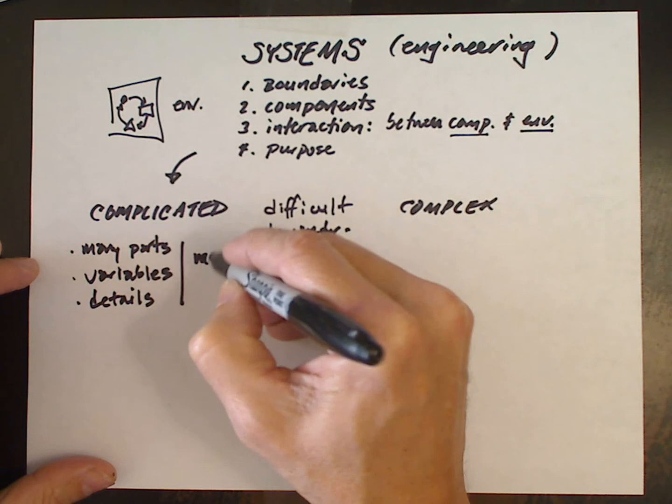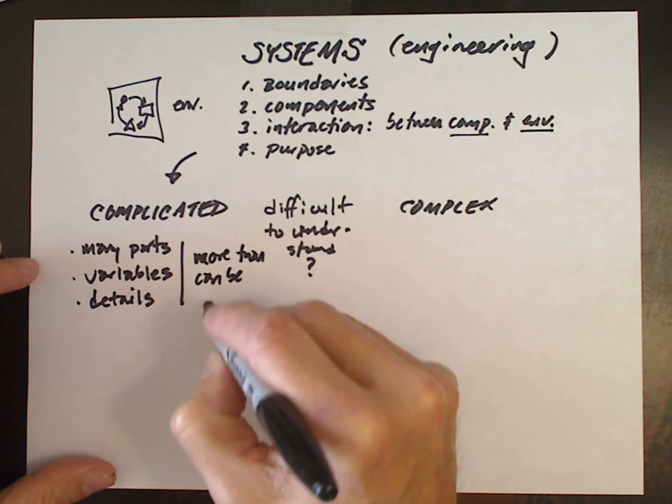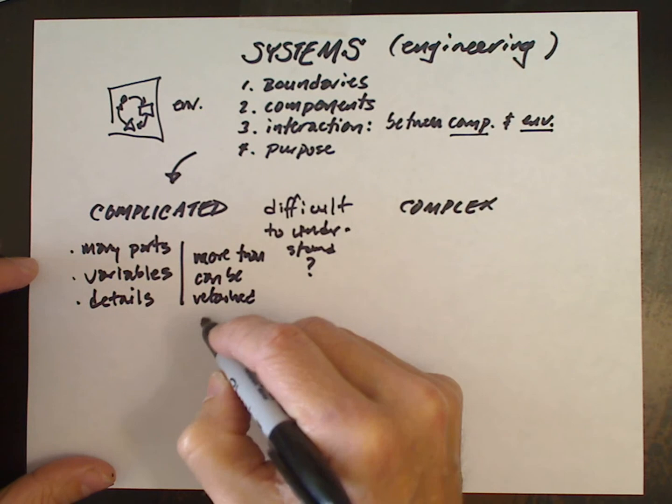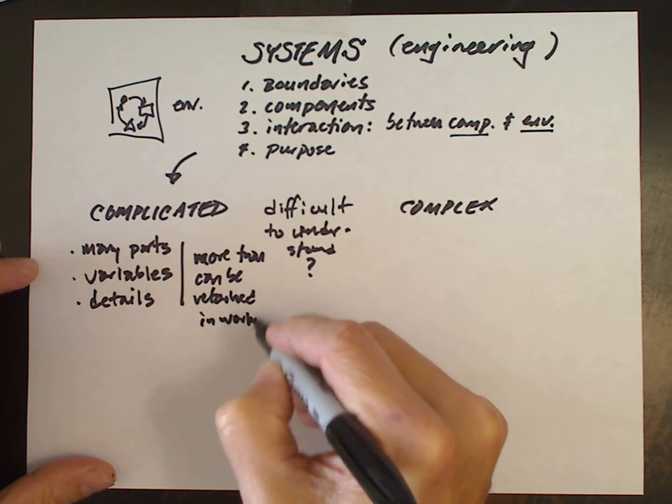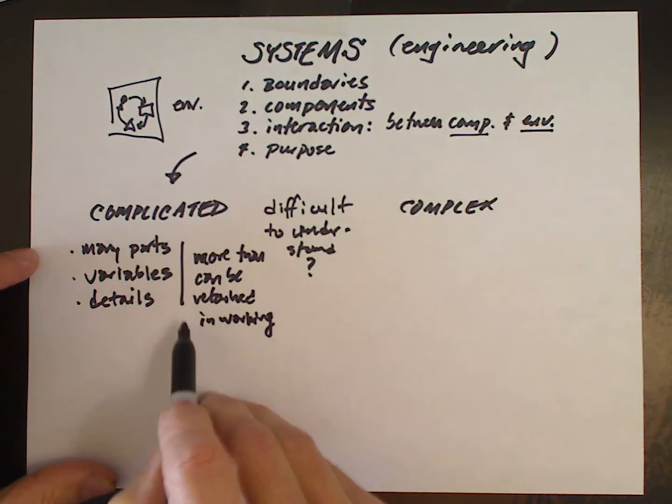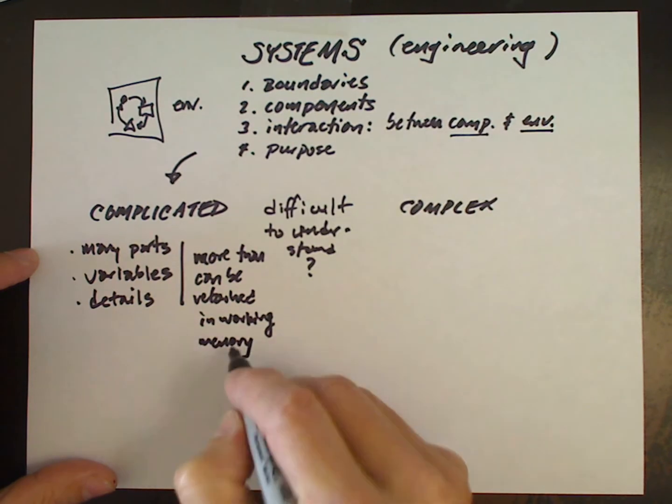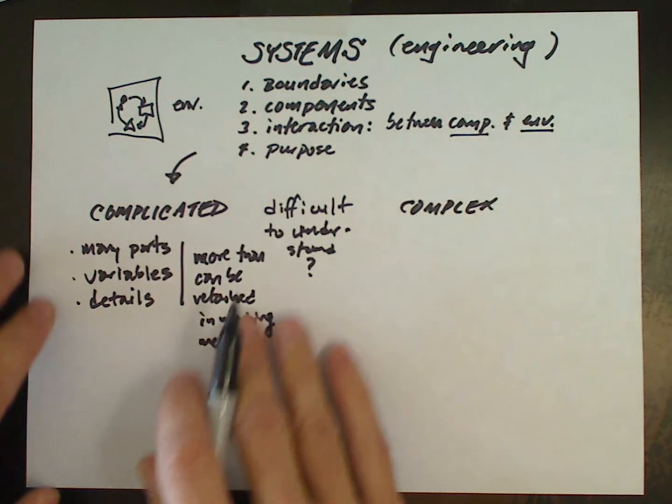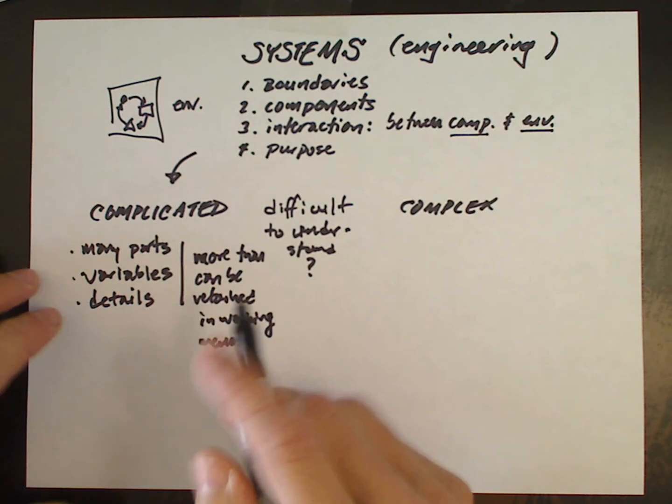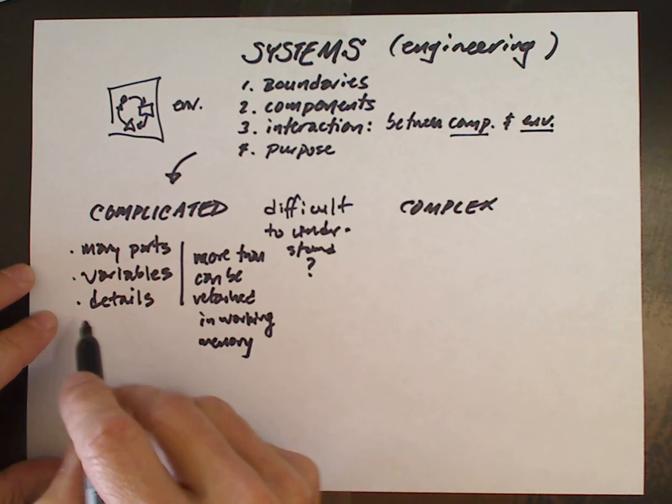More than we can retain in our working memory at one time. And sometimes that's more than just seven. Because the system is complicated, we can't hold in our working memory all the important state variables or pieces that we have to keep in mind at one time. And it helps us to have spreadsheets or models or inventories or bills of material or other sort of exosomatic memory aids to help us keep track of all that. So lots of components.